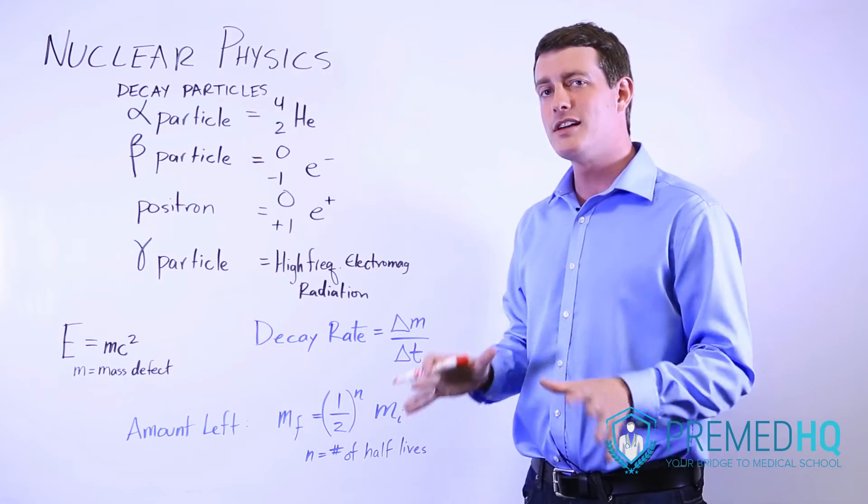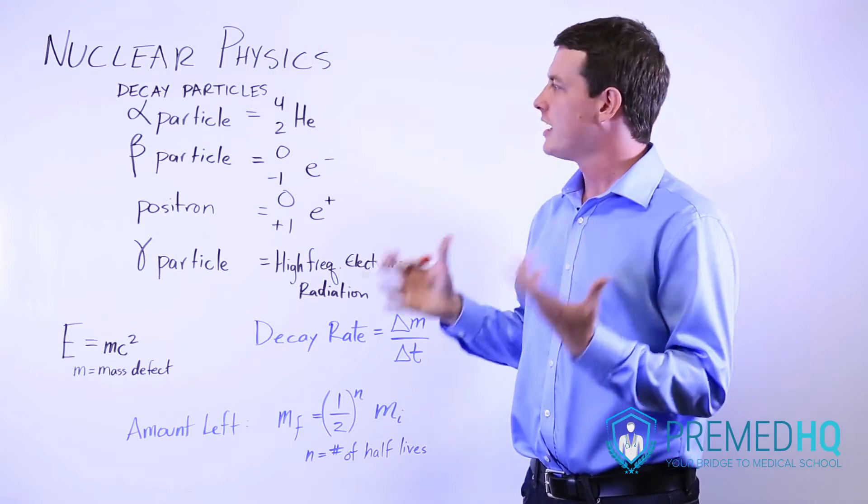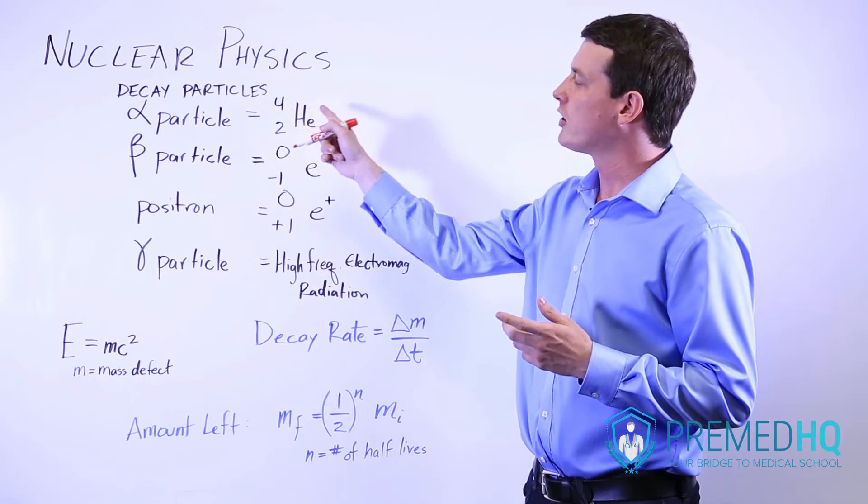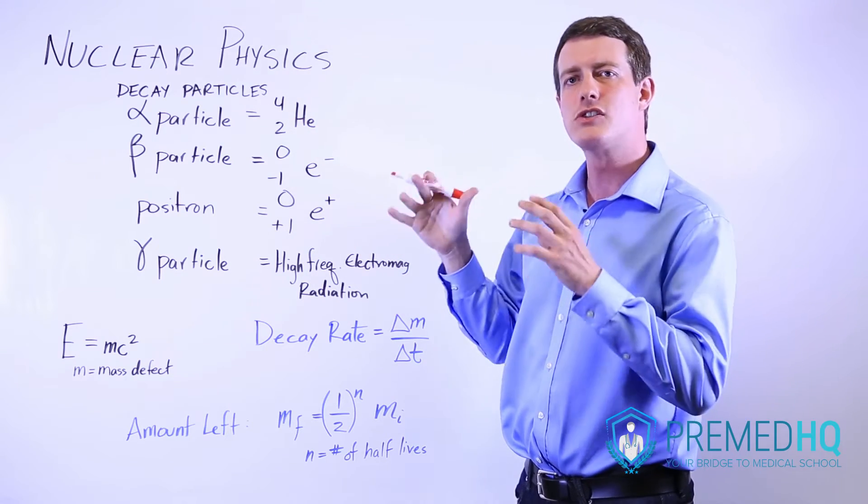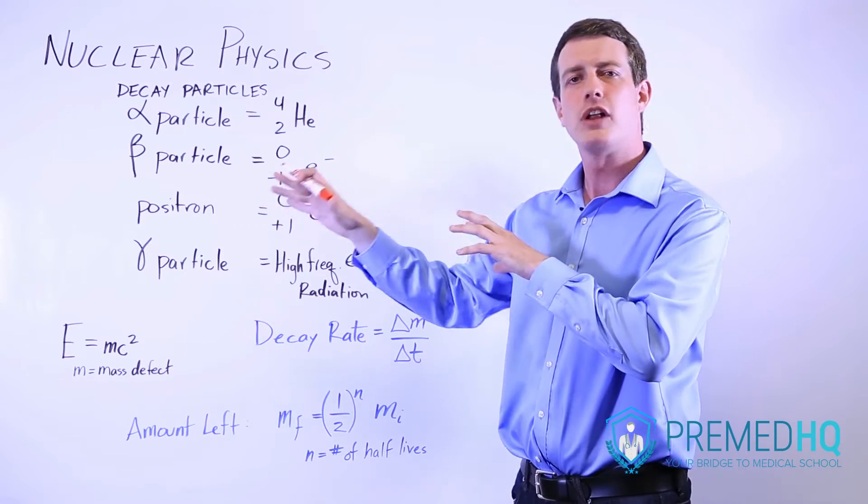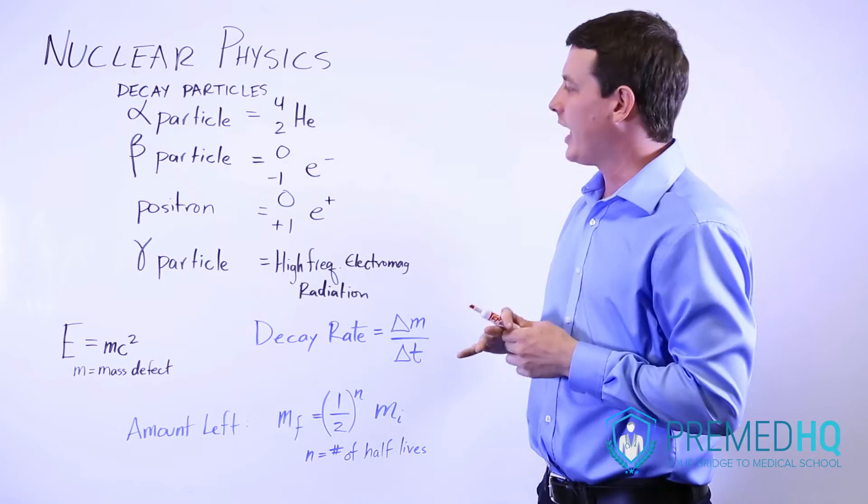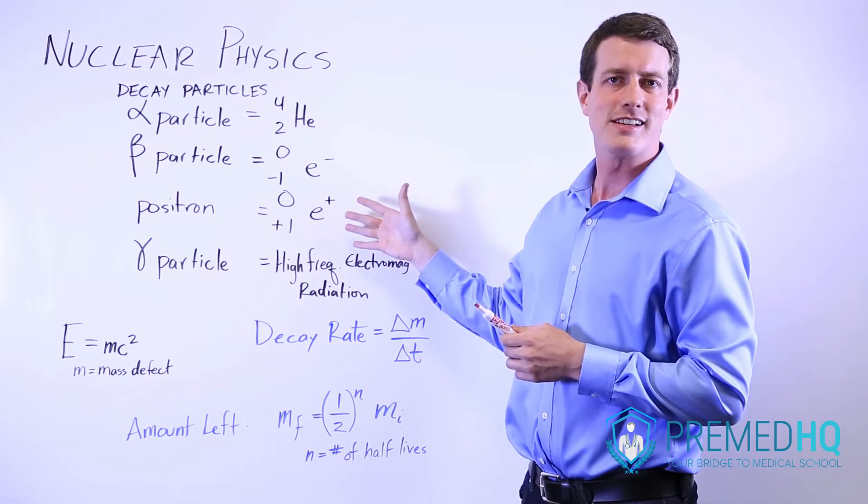When you're dealing with a nuclear decay type of formula, realize that these particles always end up on the right of the equation. These are the things that your initial atom will decay into, and that's why a positron can't exist.